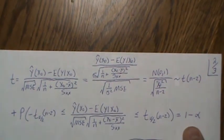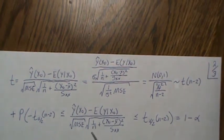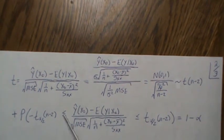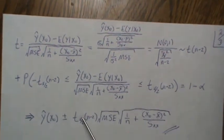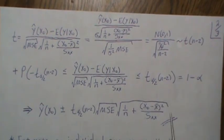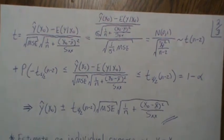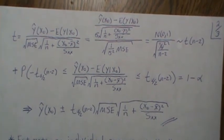Multiplying out and rearranging, we get the confidence interval for the average response at x equal to x₀. The interval is ŷ(x₀) plus or minus the t quantile times the estimated standard error.